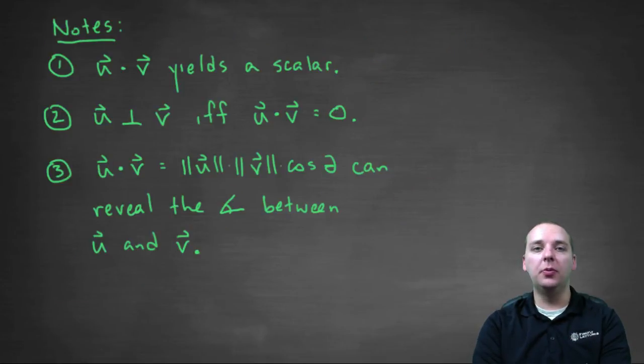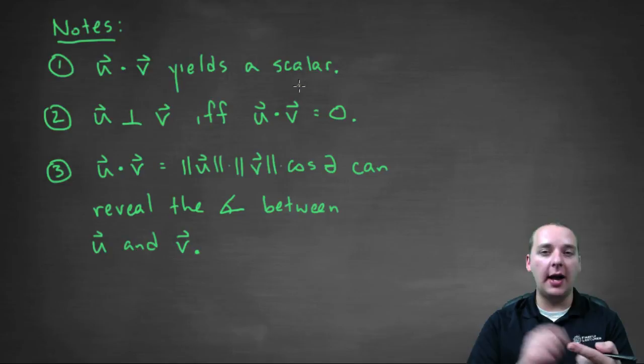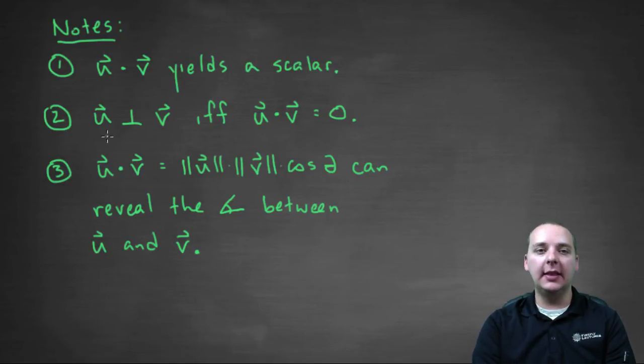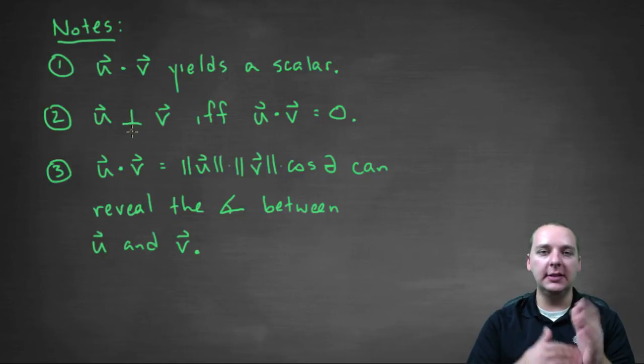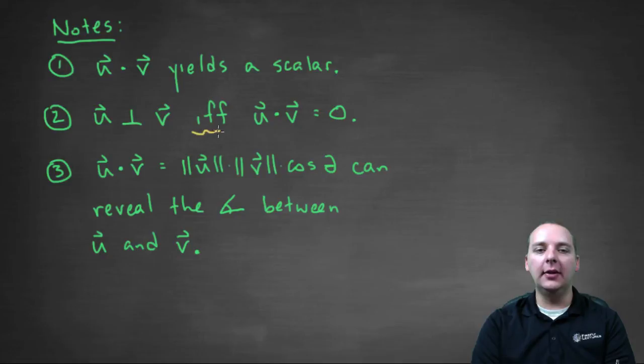Let's wrap up with just a couple closing notes. Some of these I've already mentioned. The first note is, when you take the dot product of two vectors, you get a scalar. Your answer is a scalar, not a vector. So your answer will not have I's or J's in it, or be written in component form. Second thing, U and V are going to be perpendicular to one another, or orthogonal. It's the same word, means meets at a ninety degree angle.